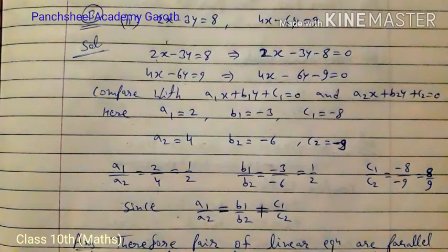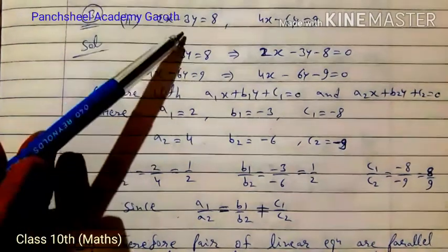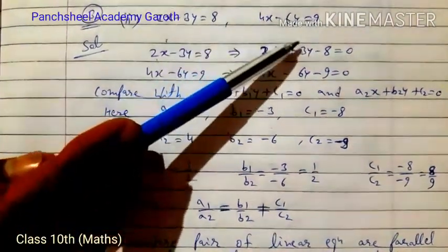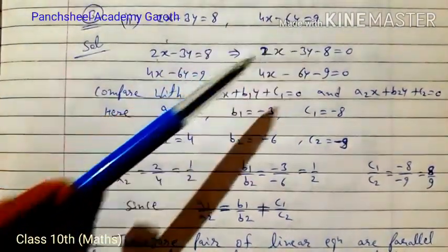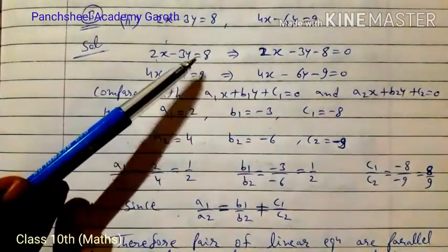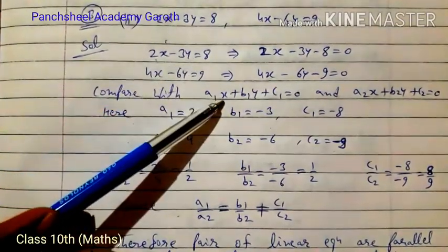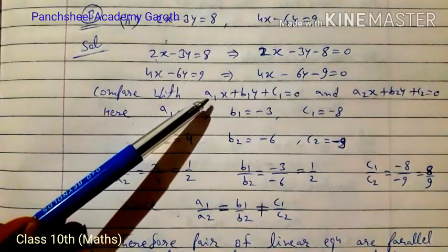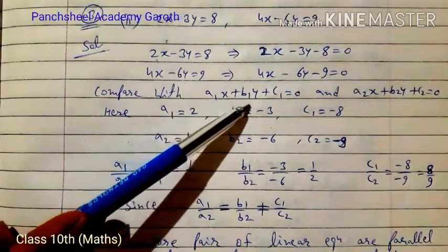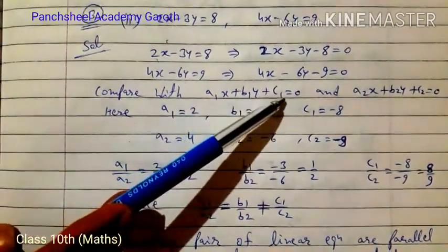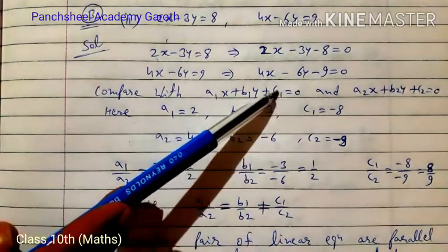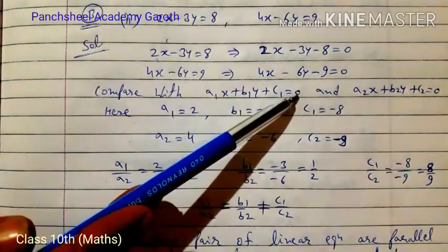Open your book and look at Exercise 3.2, question number 3, second part. The equations are: 2x minus 3y equal to 8, and 4x minus 6y equal to 9. First, we convert these equations to general form, which is a1·x + b1·y + c1 = 0.